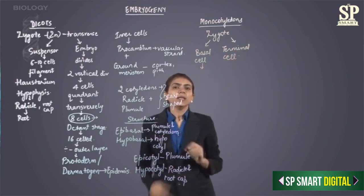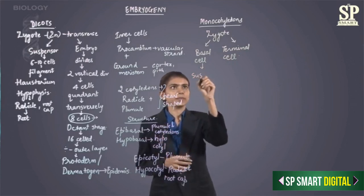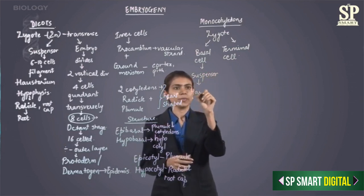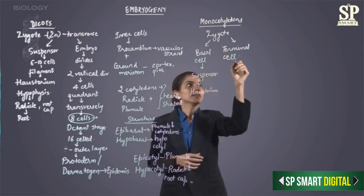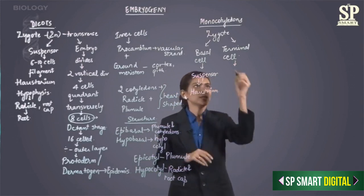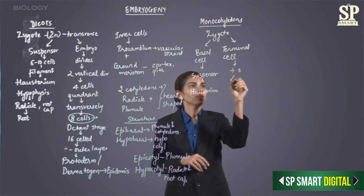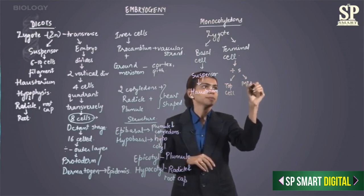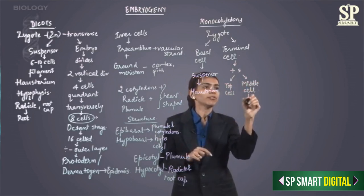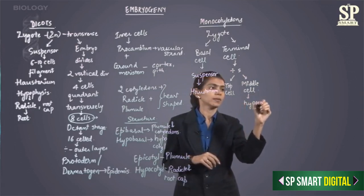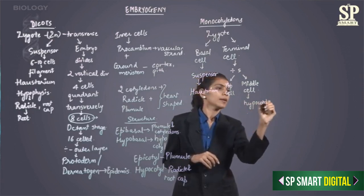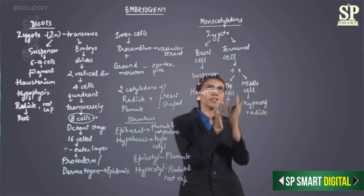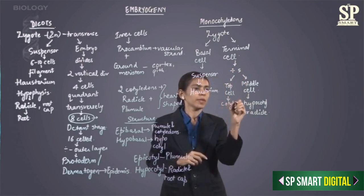The basal cell will swell up and go on to form the suspensor, and it is the suspensor which will function as the haustorium. The terminal cell will now divide into two by a transverse division, forming two cells: one is called the top cell and the other is the middle cell. The middle cell will further go on and develop into the hypocotyl and the radicle, and the top cell develops into the plumule.